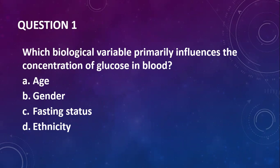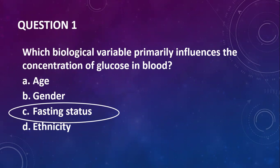Question one: which biological variable primarily influences the concentration of glucose in blood? You have age, gender, fasting status, and ethnicity. I would go with fasting status, because anytime you eat, your glucose level rises immediately.